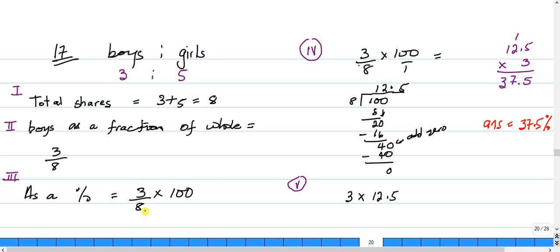Now as a percentage we would say three parts out of eight multiplied by 100. So three over eight multiplied by 100 over one is the same as saying eight into 100 and then multiplying that by three.